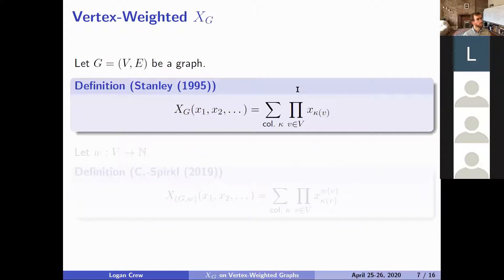One thing this does not have is a deletion contraction relation. The problem with that is every term in the chromatic symmetric function has monomials with a total exponent of the variables equal to the number of vertices, just by definition.